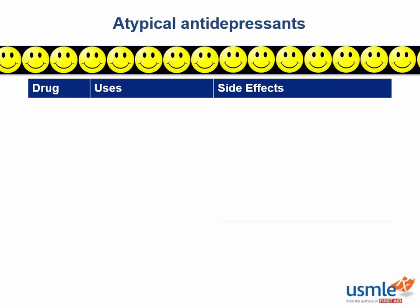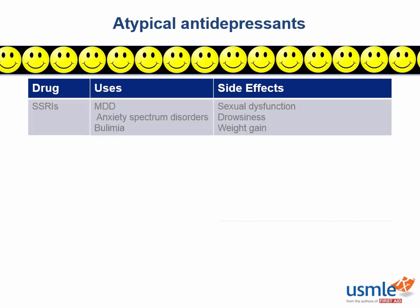The atypical antidepressants aren't characterized by a single well-defined mechanism, and because of that, the mechanisms are almost never going to be tested. What dictates whether we use them or not depends a lot on their side effects, and I'm going to compare them to the SSRIs, which are our gold standard drug.